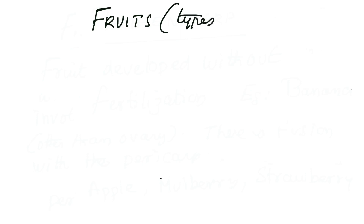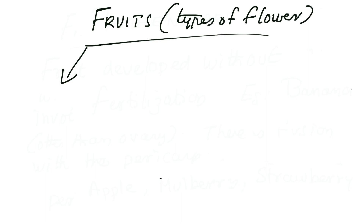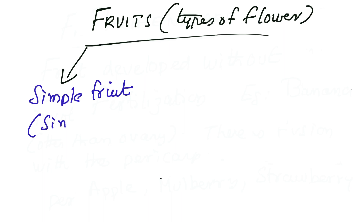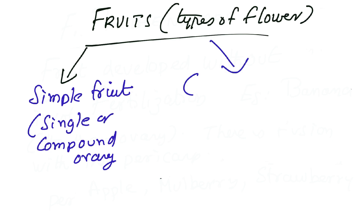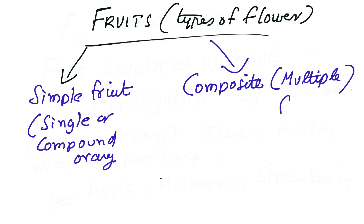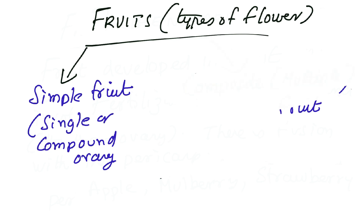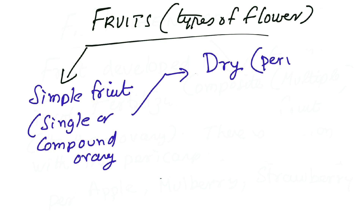Going on, let's look at the types of fruit development based on the kind of flowers involved. Since flowers are the reproductive organs of angiosperms and there is a huge range in flower types, differences arise. The first key category is a simple fruit — a case in which a single or compound ovary develops to form a fruit. The opposite case is a composite or multiple fruit, which means many ovary parts are involved.